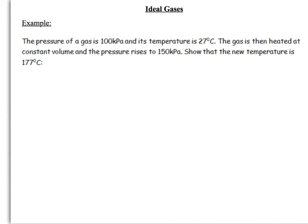You've got a gas at 100 kilopascals, a temperature of 27 degrees, and you then heat it up at constant volume to 150 kilopascals. So let's look at trying to show that the new temperature is 177 degrees centigrade. First of all, constant volume.